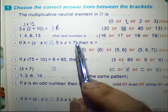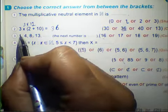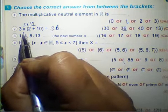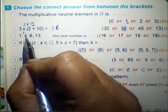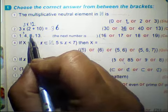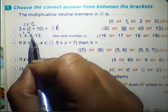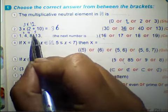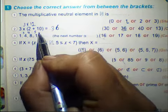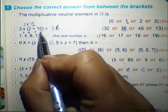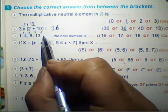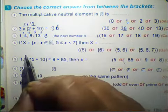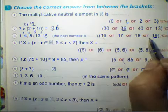The next number: from 1 to 4, the difference is 3. From 4 to 8, the difference is 4. From 8 to 13, the difference is 5, so you must add 6 in the next step. 13 plus 6 equals 19. So you must choose 19.